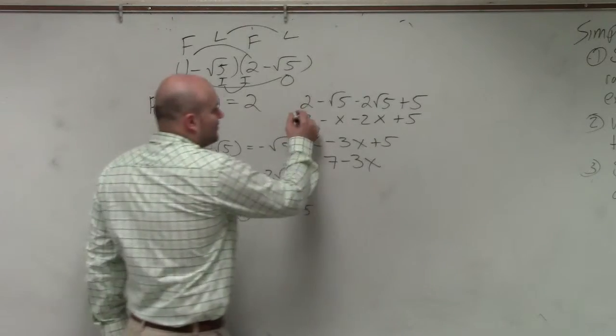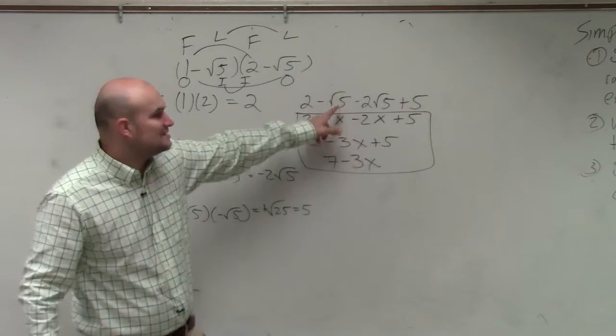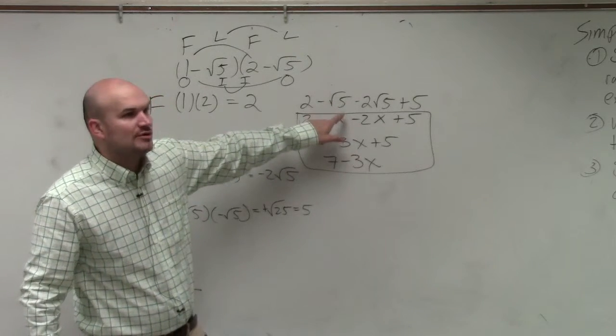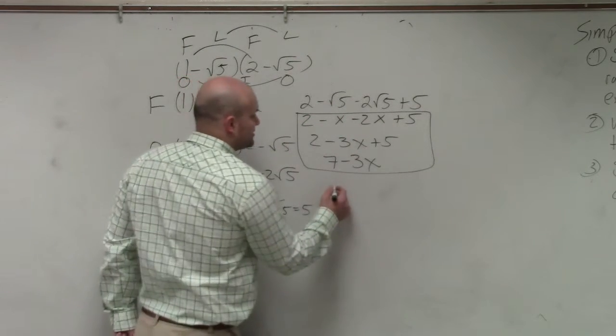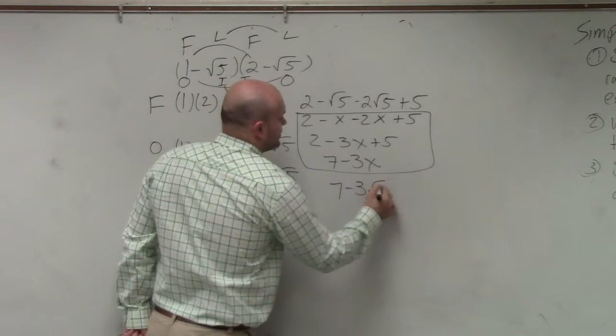That's it with variables. Guess what? The math is exactly the same. It's just instead of x, we're using square root of 5. So your final answer is 7 minus 3 square root of 5.